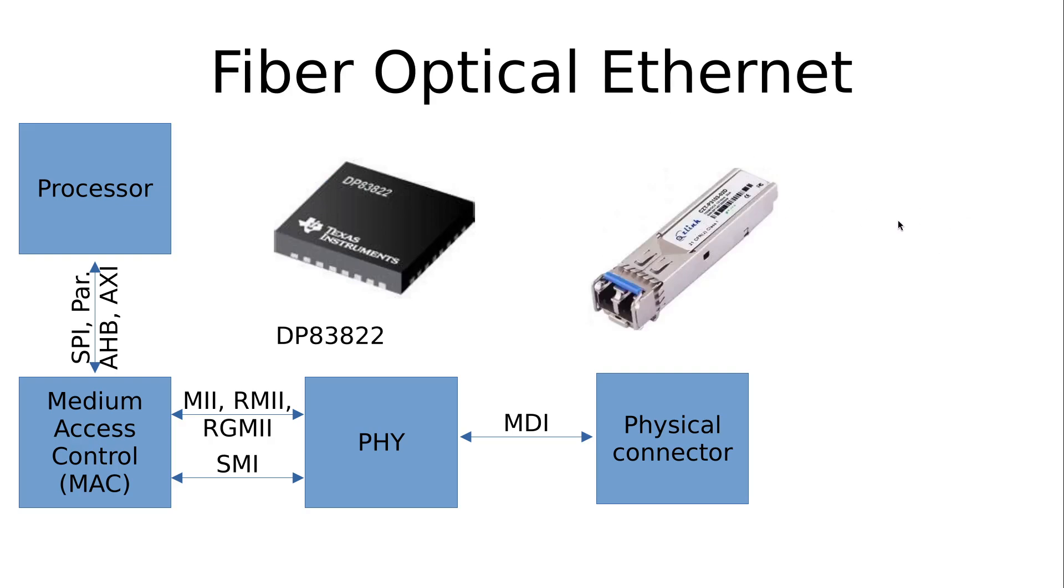And here let's take a look at a fiber optical Ethernet transmission line. Once again till the PHY everything stays the same. An example for a fiber optical Ethernet PHY would be the DP83822 from Texas Instruments and then we have our physical fiber optical transceiver on the right hand side.